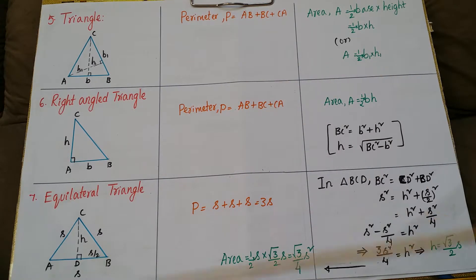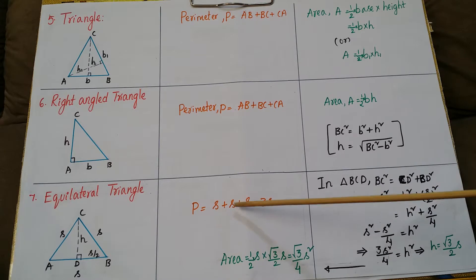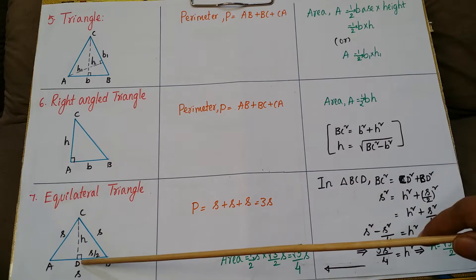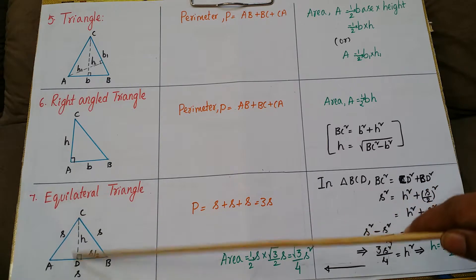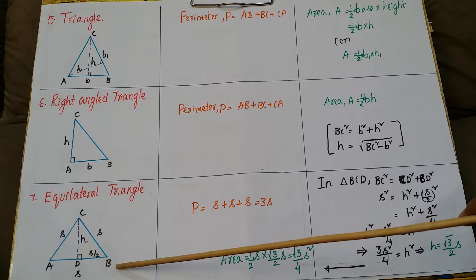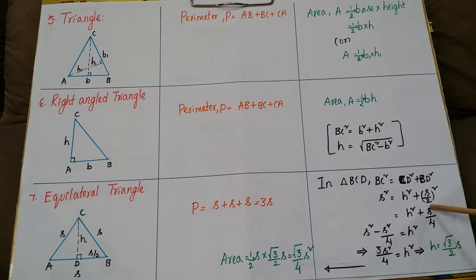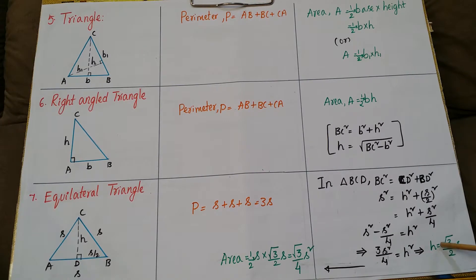For an equilateral triangle, all sides are equal, so take side as s. The perimeter is s + s + s = 3s. To find the area, consider the right triangle BCD inside the equilateral triangle, where BC = s and AB = s. We can calculate BD as s/2. Using the Pythagorean theorem: BC² = CD² + BD², so s² − s²/4 = h², which gives 4s² − s² = 3s², therefore 3s²/4 = h².